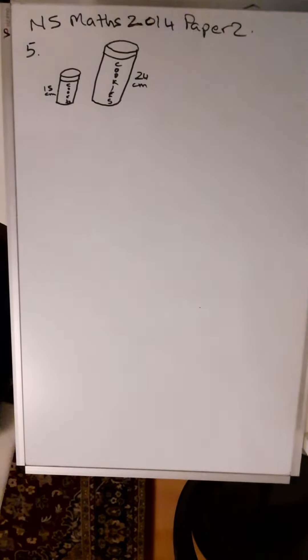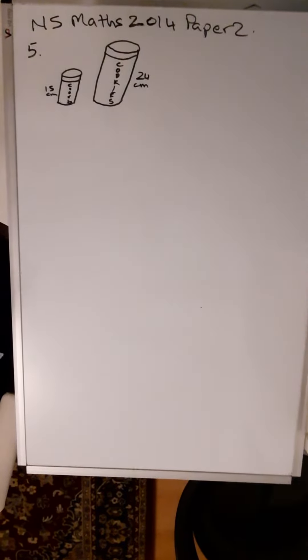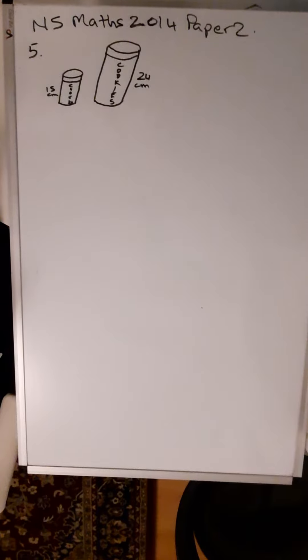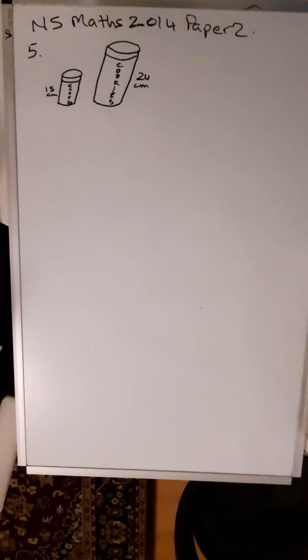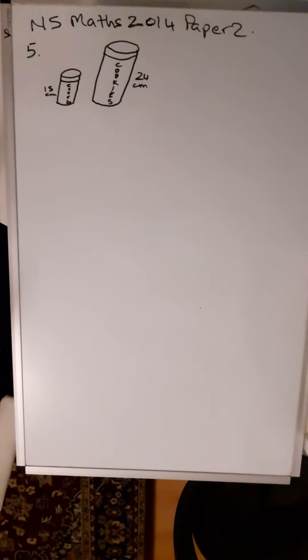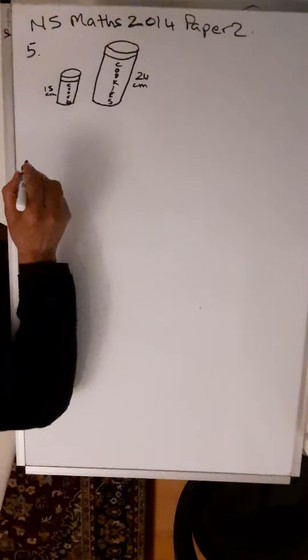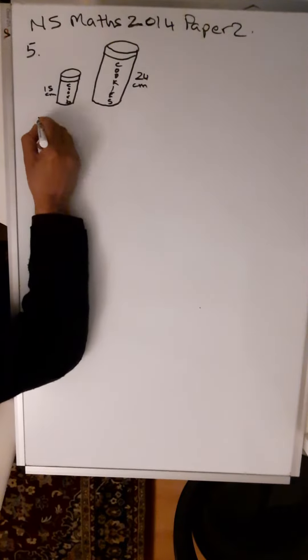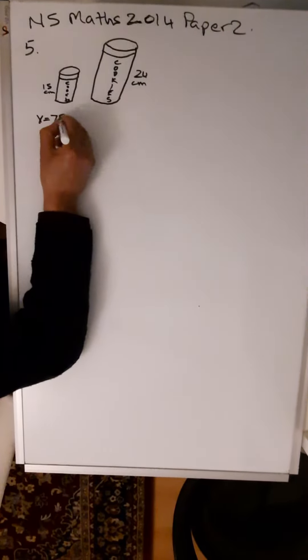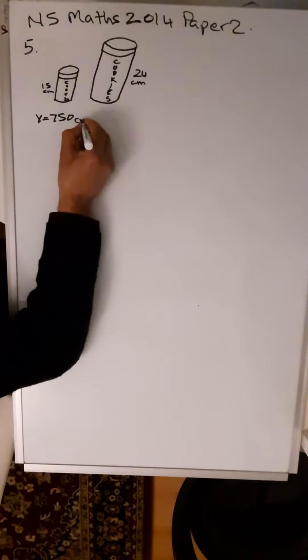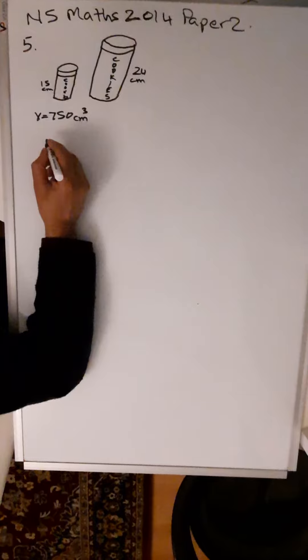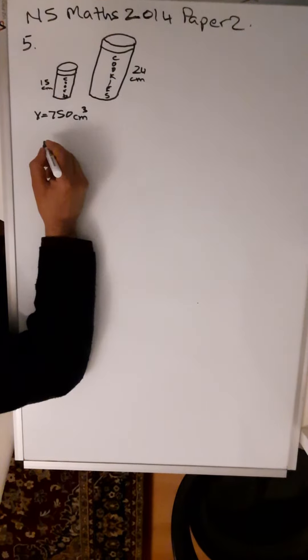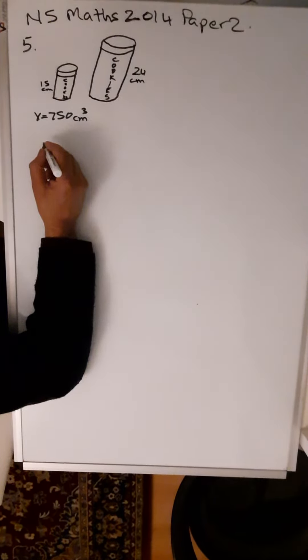So, math 2014 paper 2 question number 5. The supermarket sells cylindrical cookie jars which are mathematically similar. The smaller jar has a height of 15 centimeters and a volume of 750 cubic centimeters. The larger jar has a height of 24 centimeters. Calculate the volume of the larger jar.